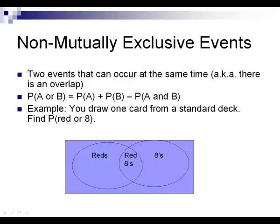Non-mutually exclusive events means that the events can occur at the same time — there is an overlap between them. The probability of A or B occurring equals the probability of A plus the probability of B minus the probability of both A and B occurring. The probability of A includes the idea of A and B, and the probability of B also includes A and B, so you subtract out one overlap because you've double-counted those cards.